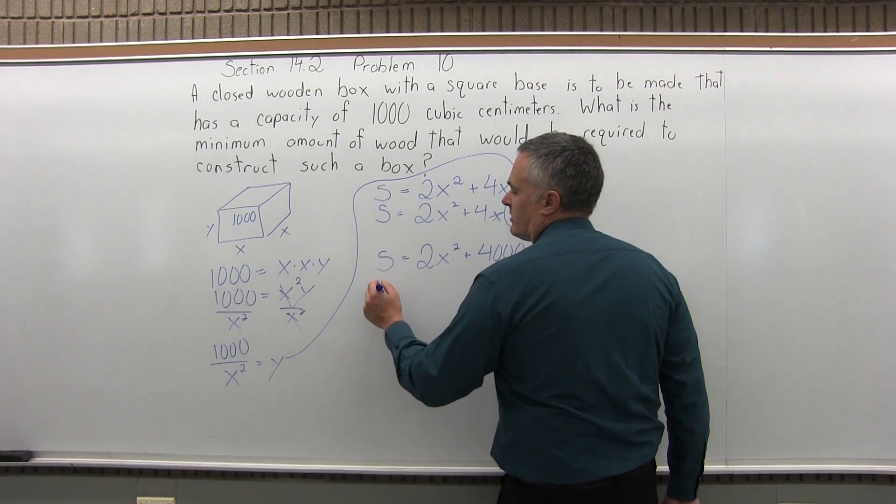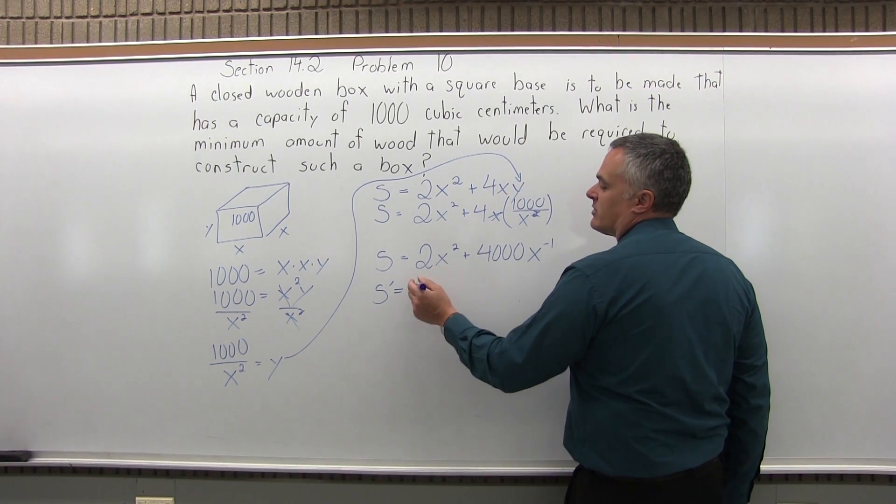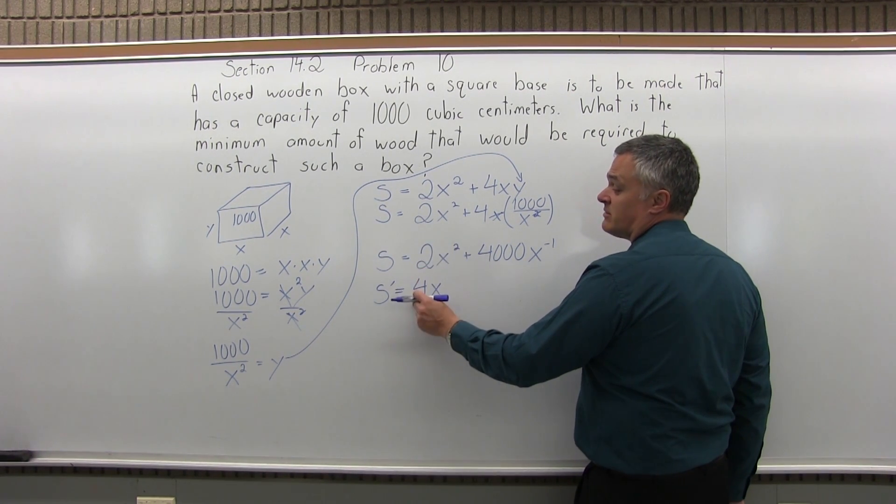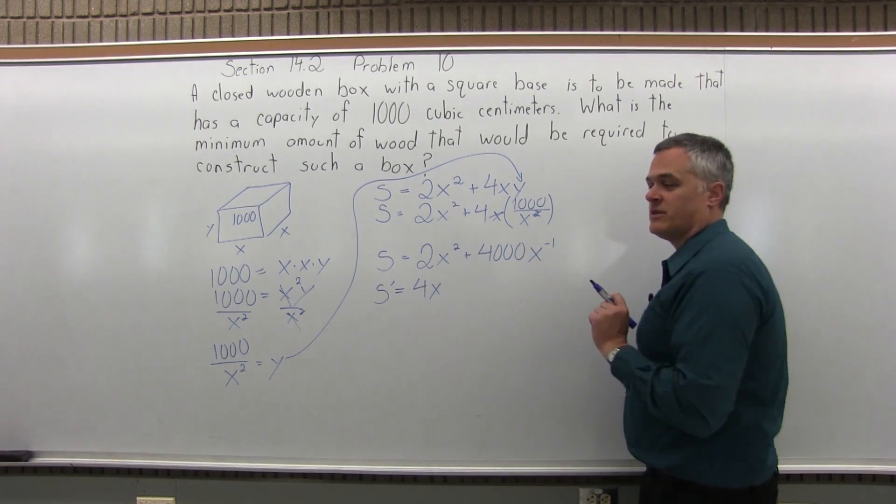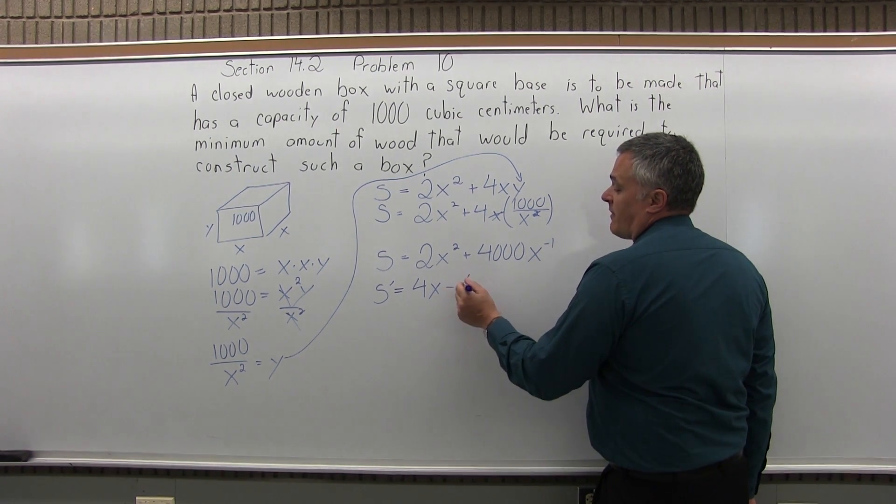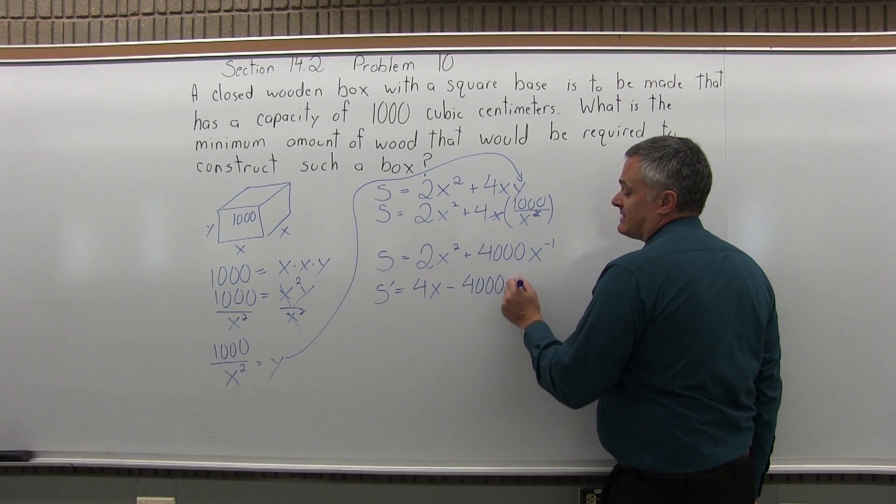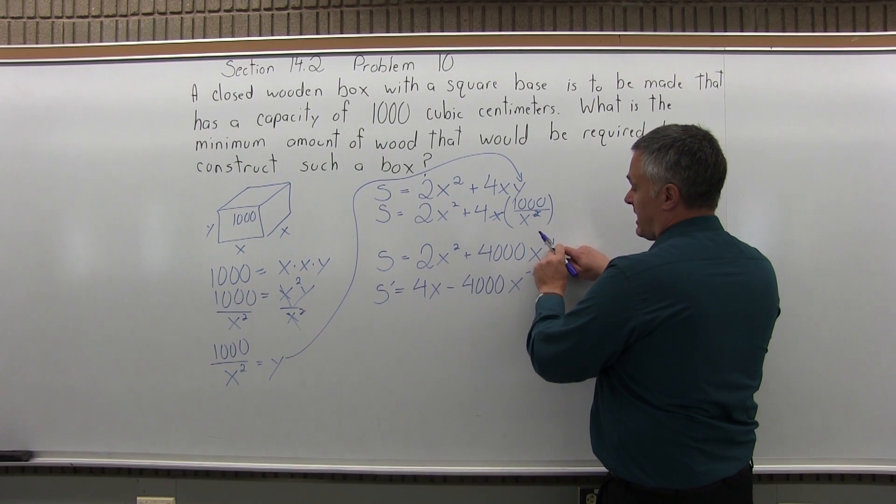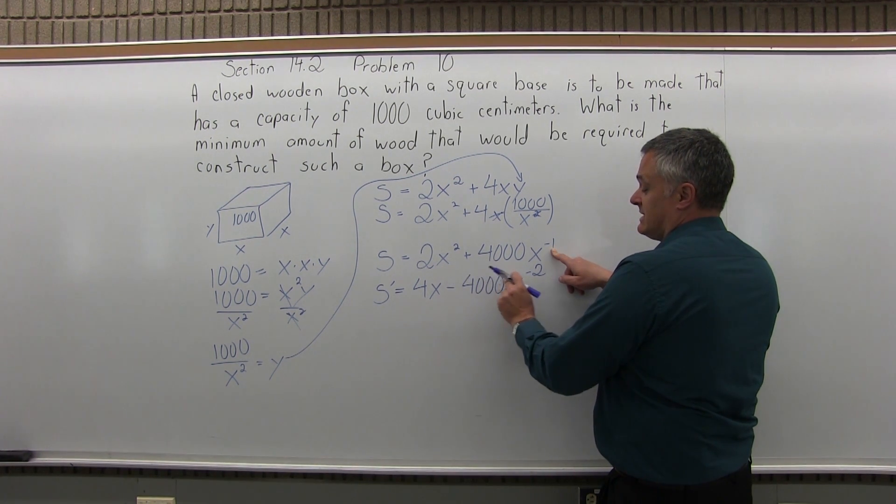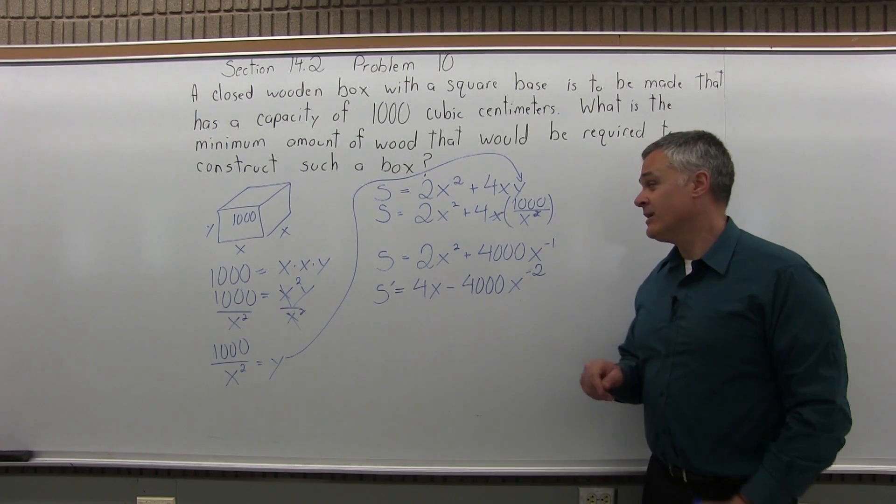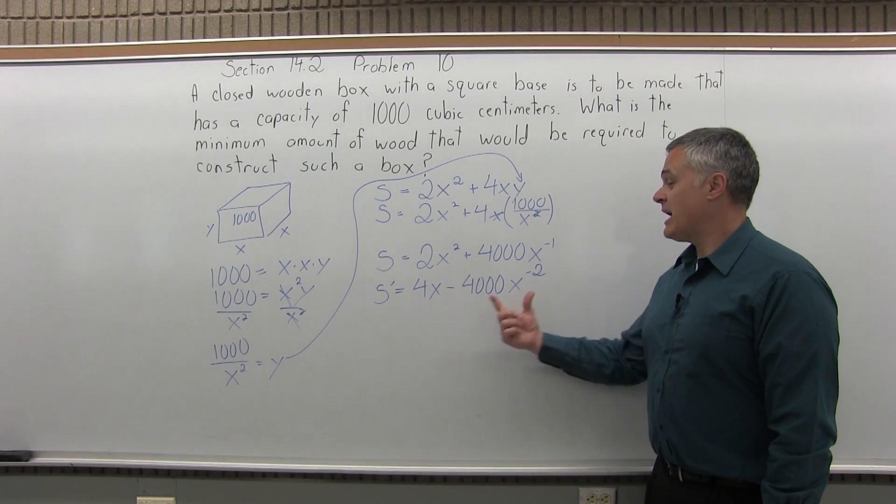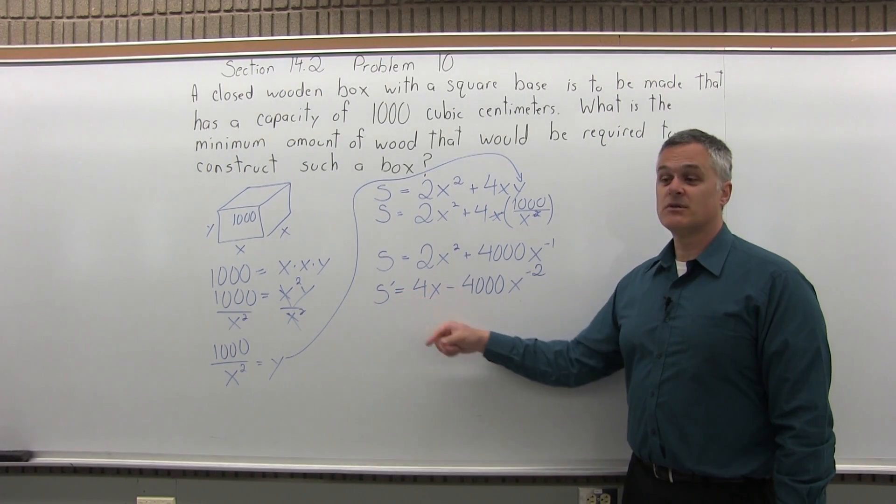Now we're going to do s prime, we're going to take the derivative. So s prime equals the 2x squared, we'll have a derivative of 4x to the first, again that comes from the exponent of 2 coming down times the number in front of another 2. 2 times 2 is 4, x to 1 less power, that second power drops to the first power. Now the 4,000x to the minus 1, that has a derivative of minus 4,000x to the minus 2. Now again that's coming from the exponent of minus 1 coming down times the number in front of 4,000, minus 1 times 4,000 is minus 4,000. And then the exponent drops 1, so it goes from a negative 1 power down to a negative 2 power. You've got to pay attention when it's negative. So now that's my derivative, that's the s prime.